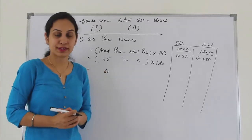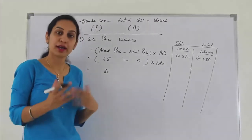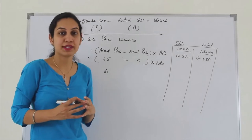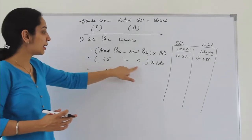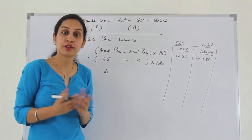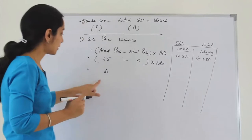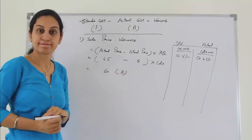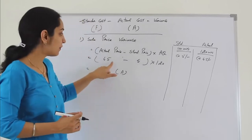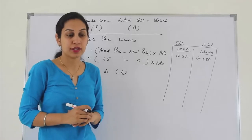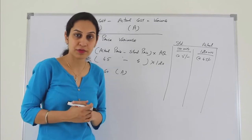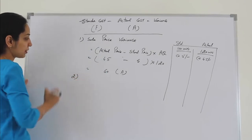Now the question arises: is it favorable or adverse? Remember what we discussed — when my actual is better than my standard, that makes it favorable; vice versa, adverse. See the sign inside the bracket: it's negative. You thought you would sell at 5 but actually sold at 4.5 — that's negative. So the 60 variance will be adverse. The signs are always decided inside the brackets, not outside. If inside the bracket it's a negative figure, whatever you multiply it with, the sign remains the same.